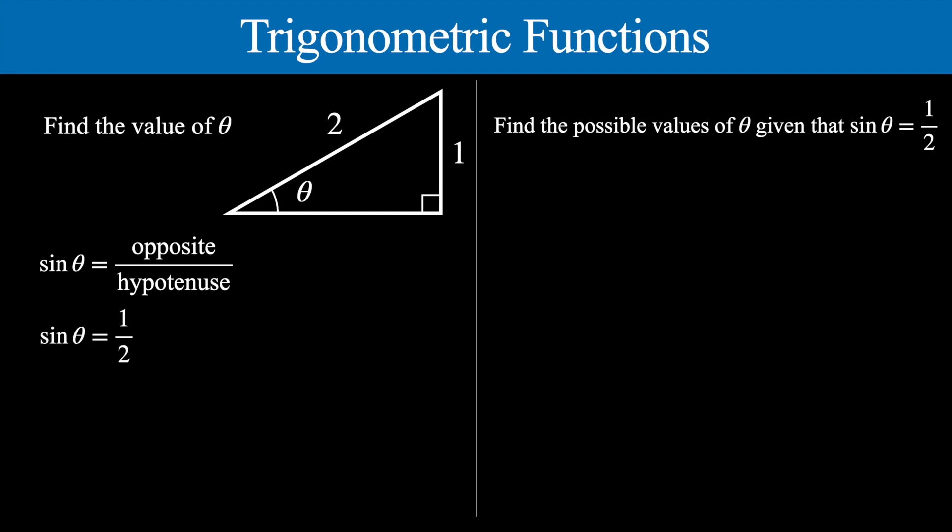To solve for the angle we take advantage of the fact that throughout history mathematicians have found all of the angles for all possible ratios. What we put into our calculator is the inverse sine of a half to find that angle. You might also know the exact value: sine theta equal to a half gives an answer of 30 degrees. So we know theta equals 30 degrees.